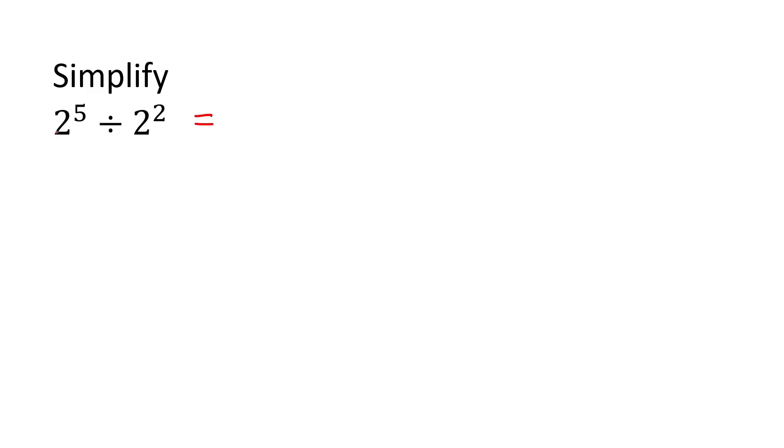So when the base numbers are the same, leave the base. Then, because this is a divide, what do we do with the exponents? We subtract. Well done. So five minus two, what is that? That is three. There we go.